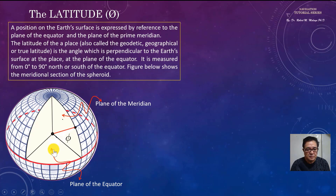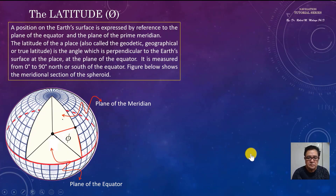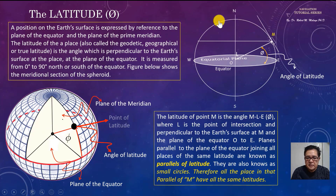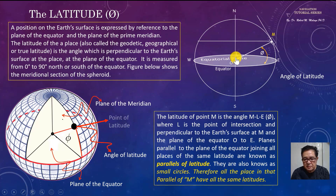This is the plane of the equator and this is the plane of the meridian. In this figure, the latitude of point M is the angle M, L, E, where L is the point of intersection at the center of the sphere and perpendicular to the Earth's surface at M, and the plane of the equator joining all the places of the same latitude.